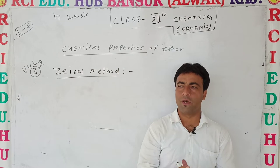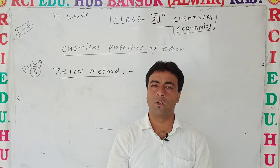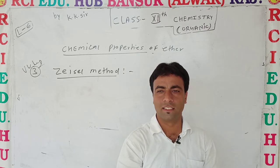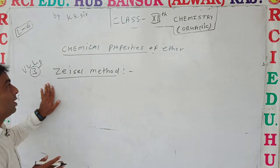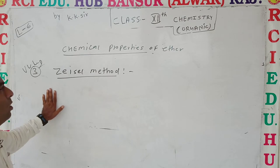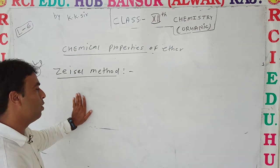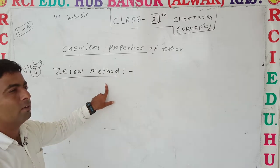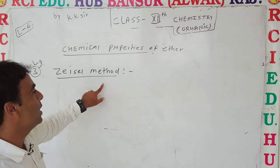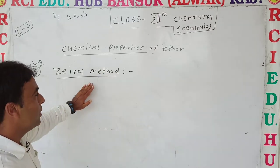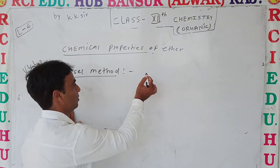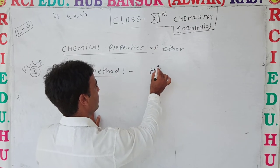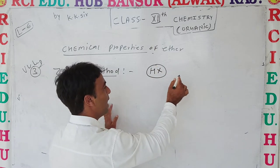Hello dear students, welcome to chemistry class. Today we start with the chemical properties, continuing with ether — specifically the last property of ether, which is the Zeisel method. This is a very important method.